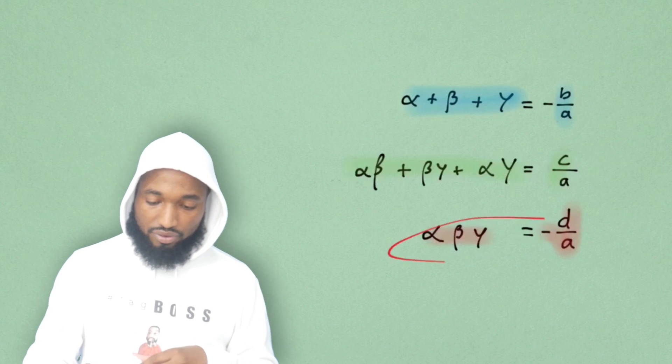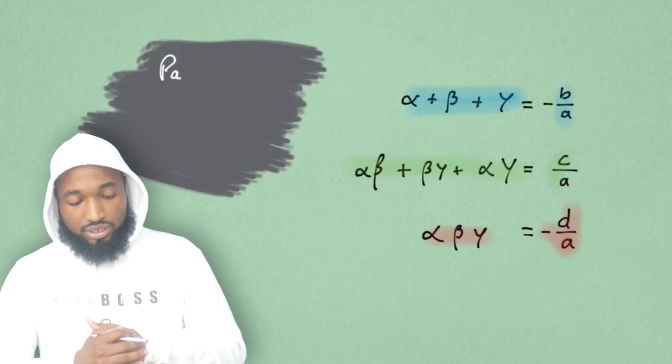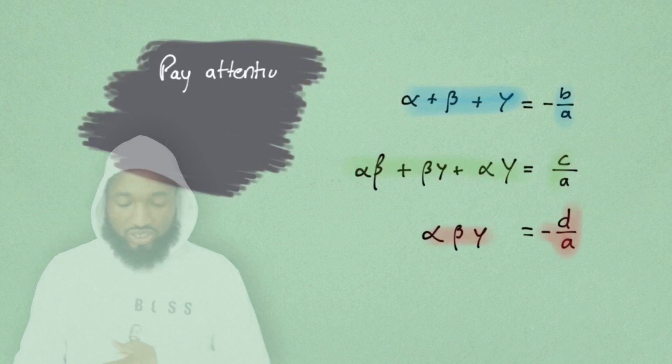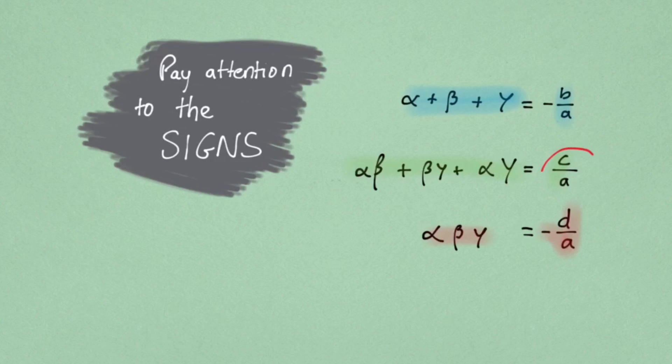And this is your product of the roots as well. You want to pay attention to the signs because here we have negative B on A, here we have C on A, and here we have negative D on A.